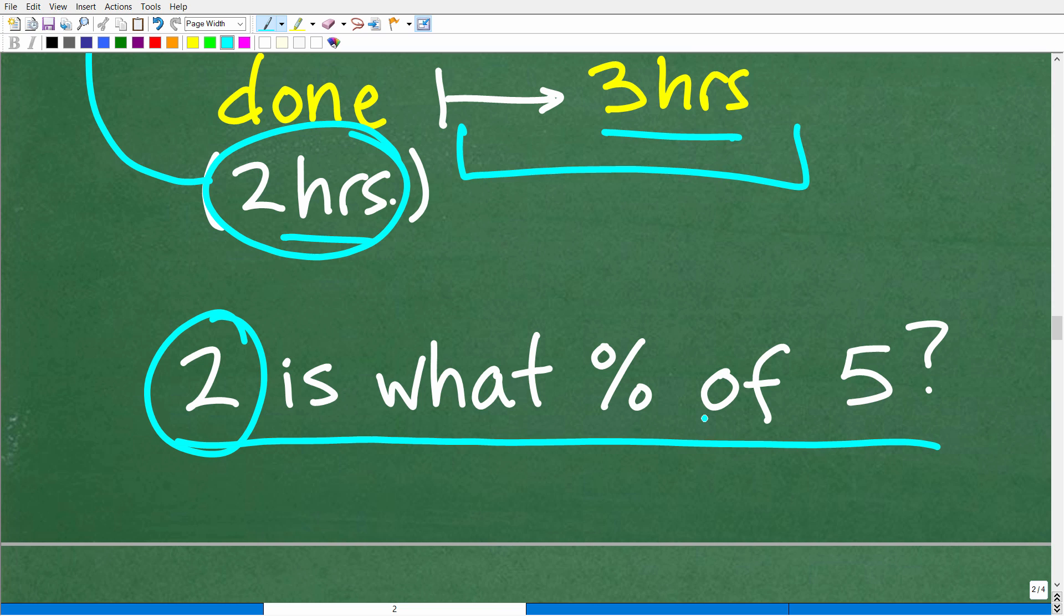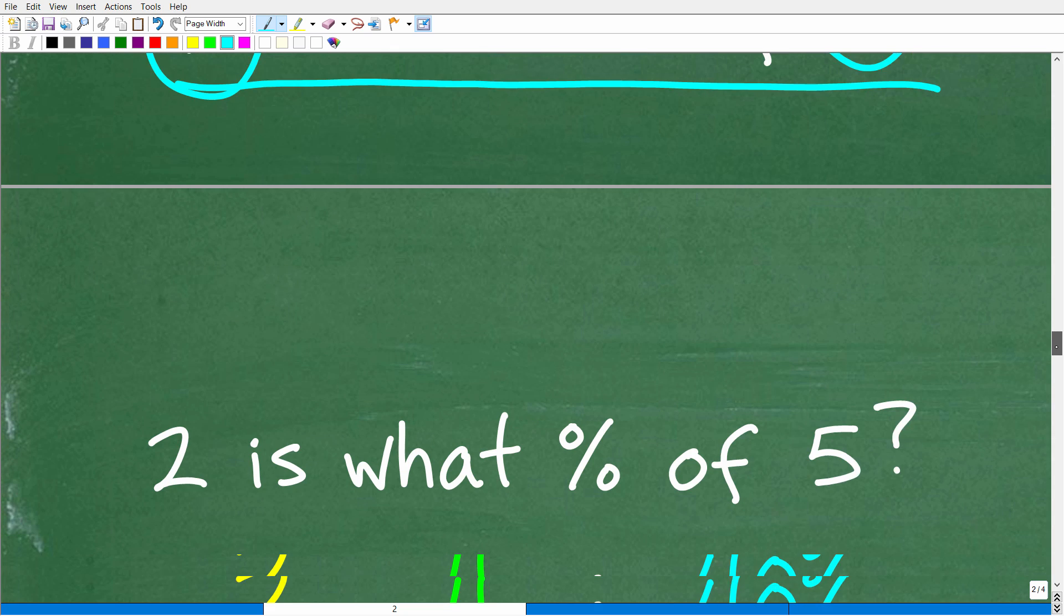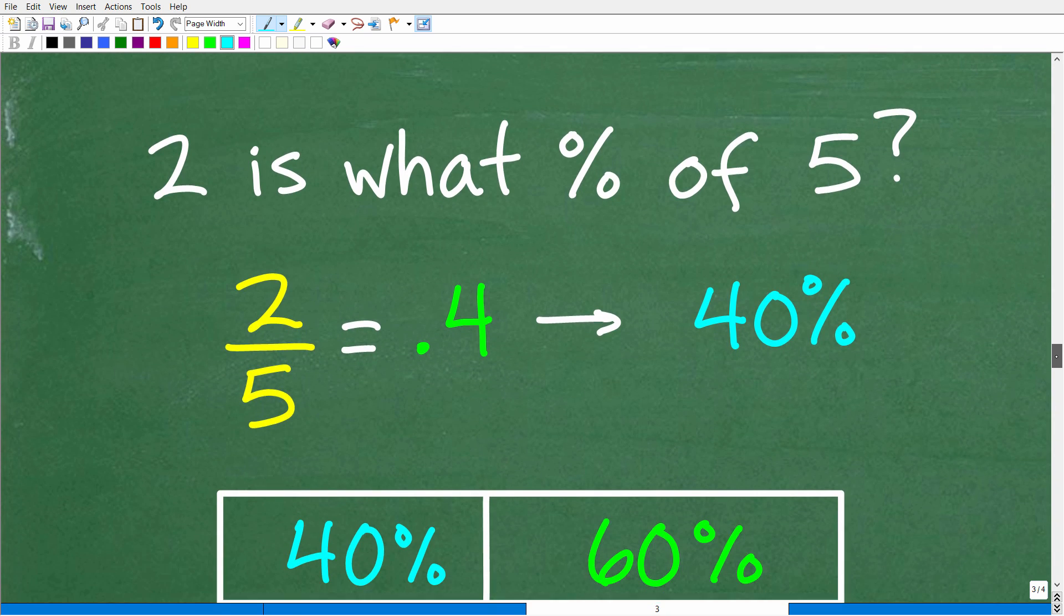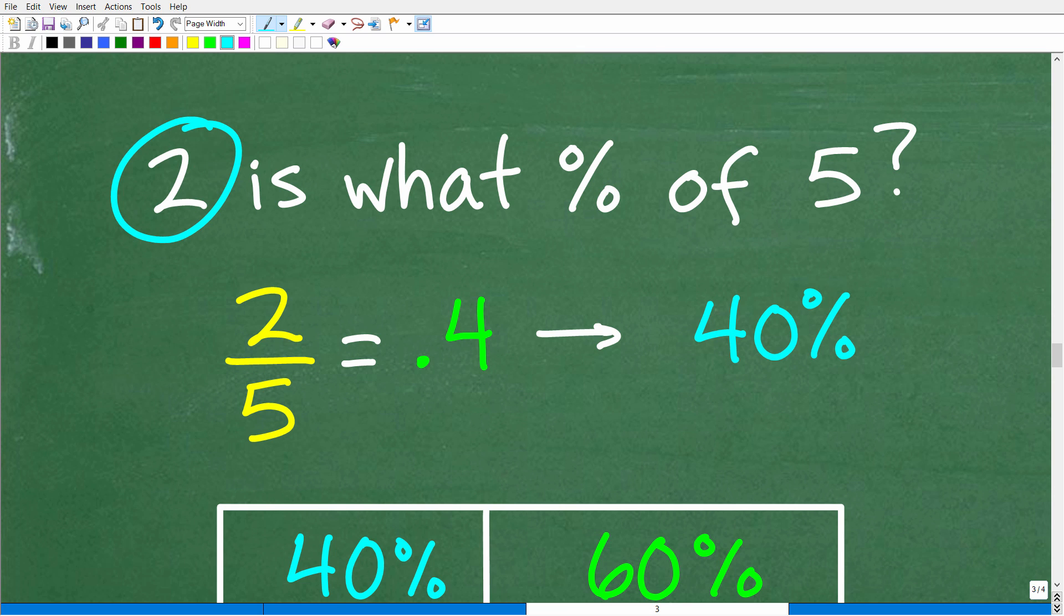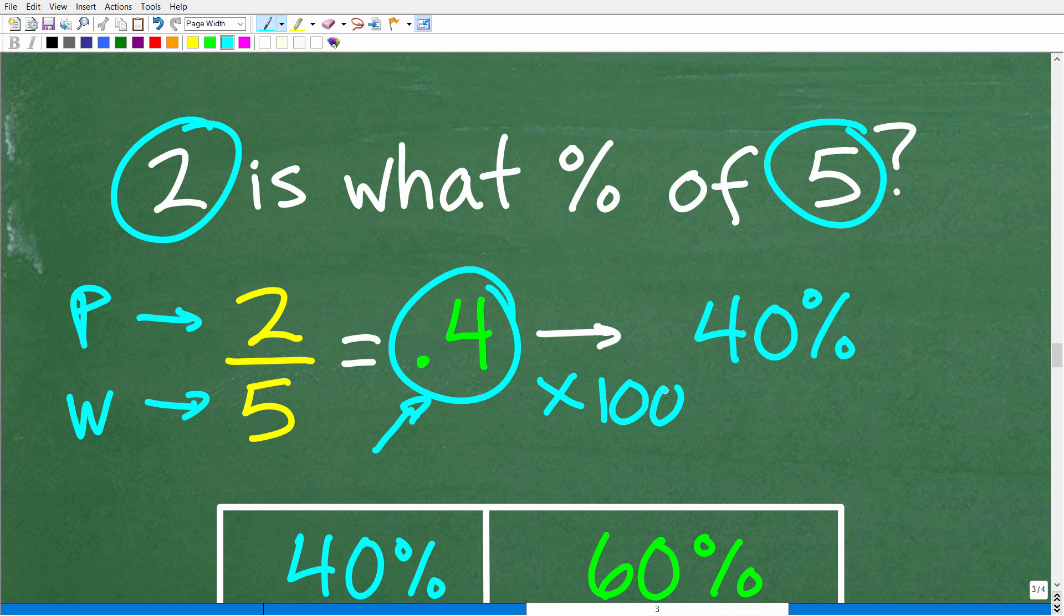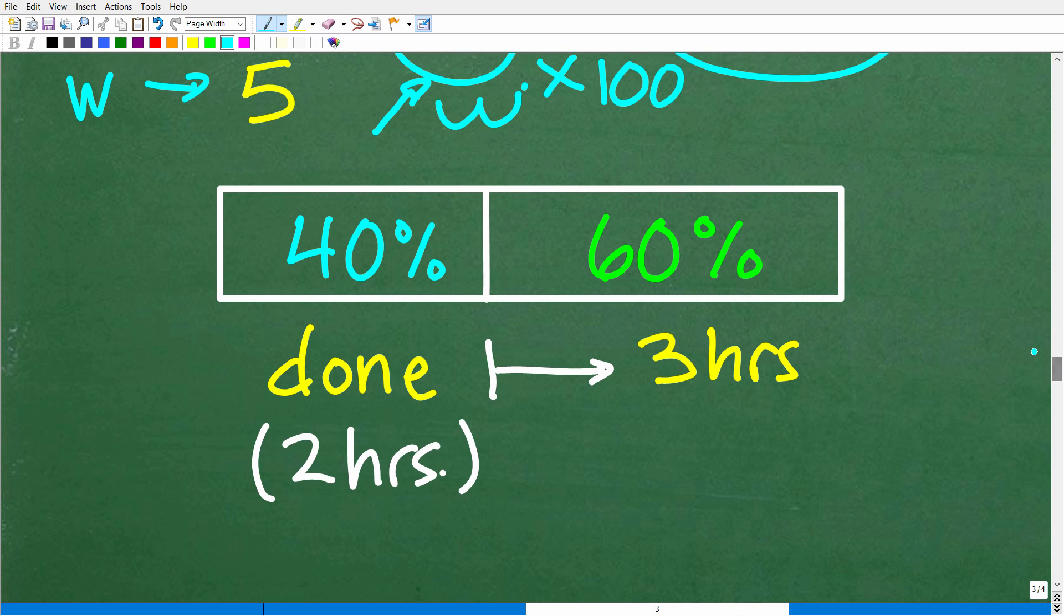So two hours is what percent of the entire five hour shift. Now, if we did this right, it should be 40%. So let's go ahead and answer that question real quick. So two is what percent of five. So this is the part, this is the whole. So another type of percent question, right? So the way we're going to answer this is just take the part here, two, and divide it by the whole, which is five. So two divided by five is 0.4. So this is a decimal. We want a percent. So what we need to do is multiply this by 100 or move the decimal point over two places to the right. And we get 40%. So indeed this makes sense. So two hours is 40% of our five hour shift.